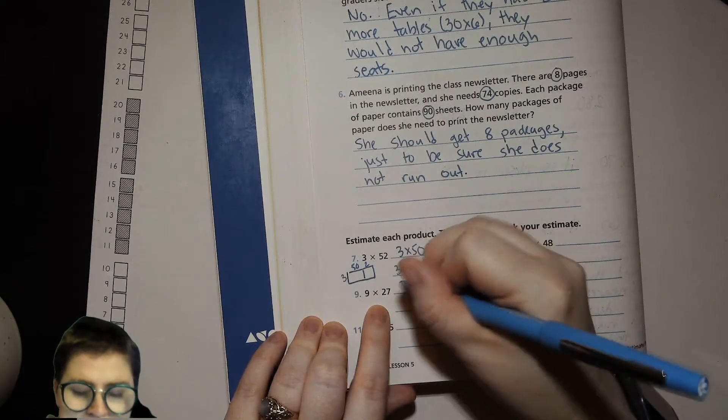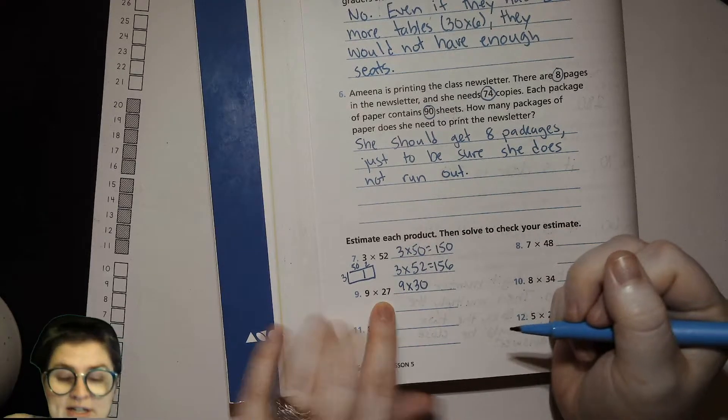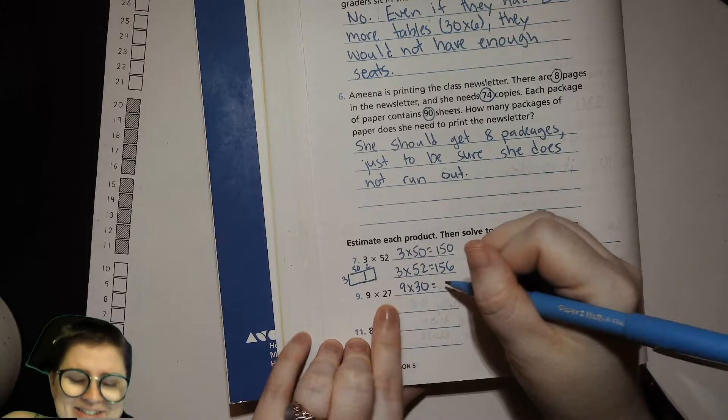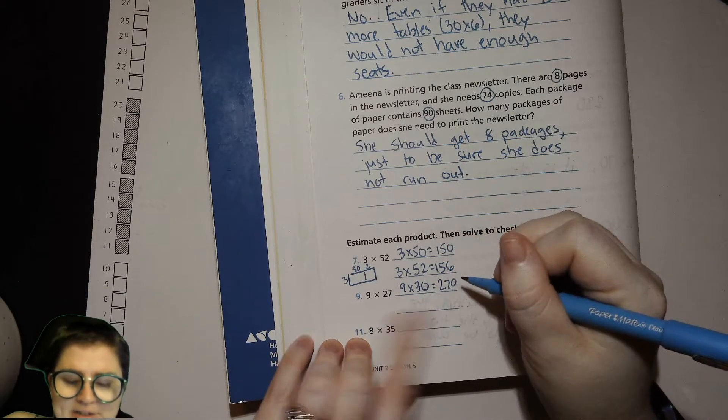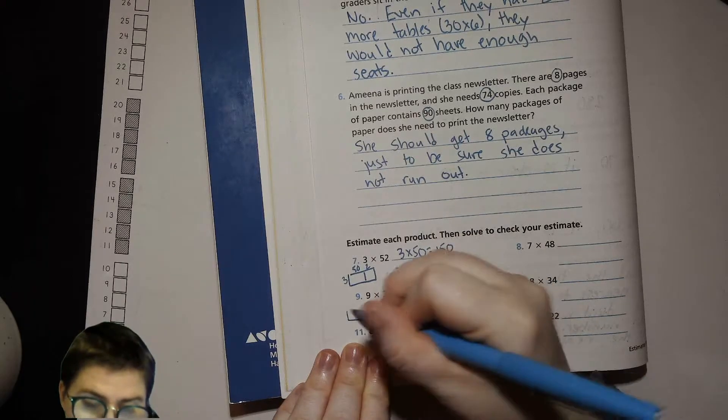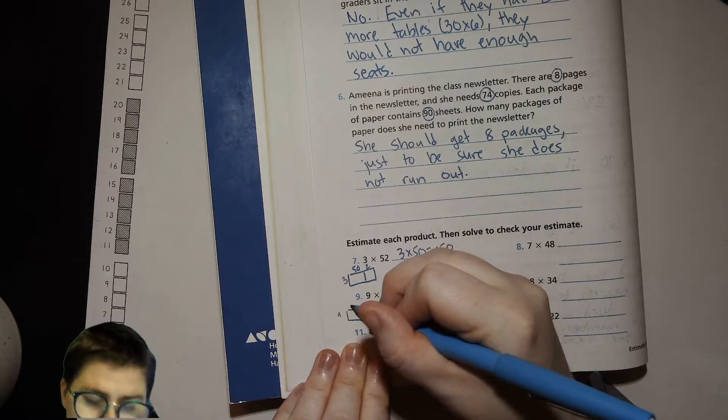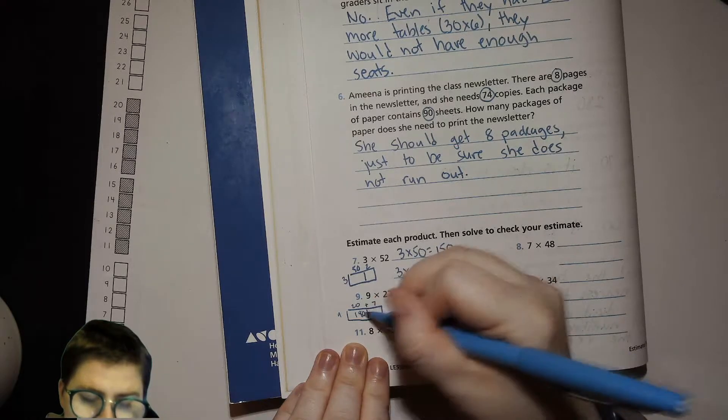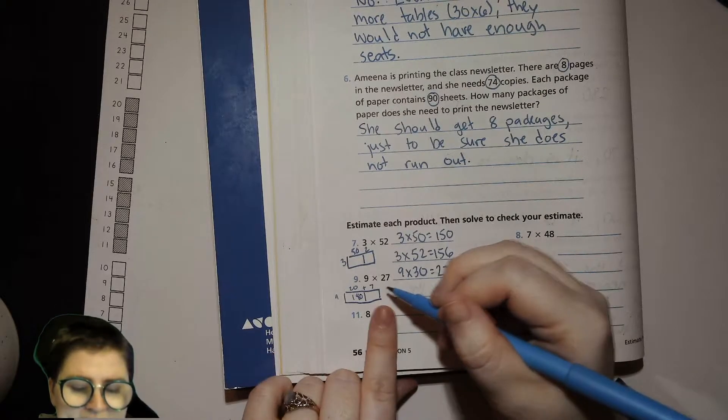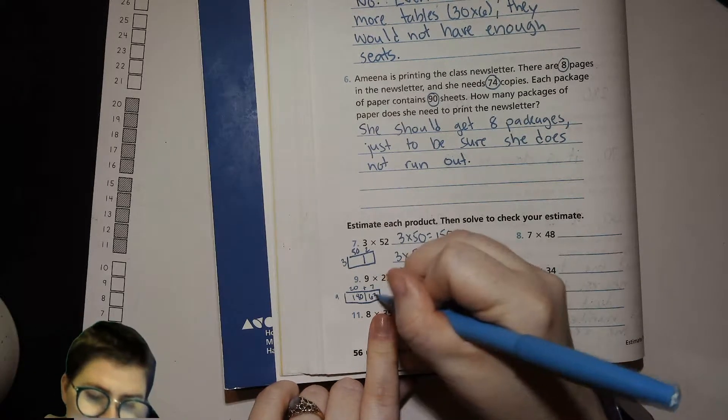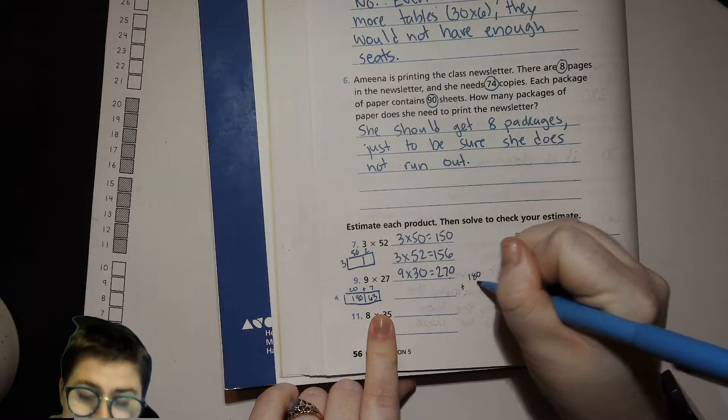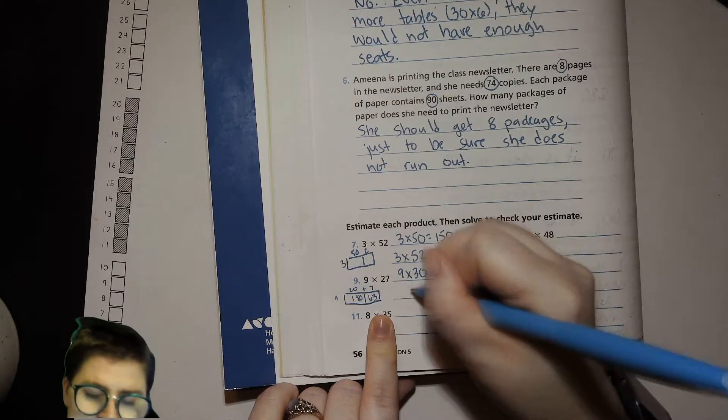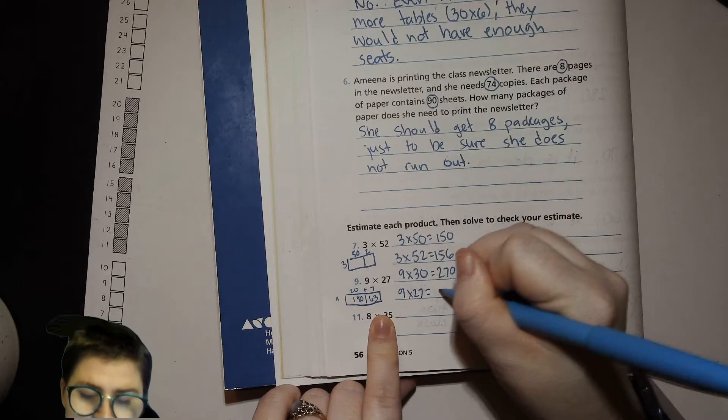Nine times 27. So nine times 30, 27 rounded to the nearest 10 is 30. Nine times three is 27. So then that'd be 270. But that's a little bit high. Nine times 20 would be 180. And then nine times, kind of small, nine times seven is 63. Then we have 180 plus 63. So that would be 9 times 27 equals 243.